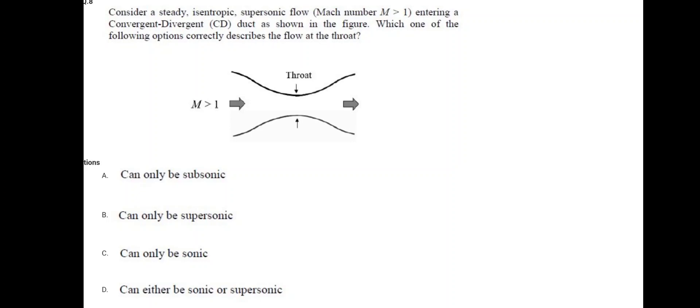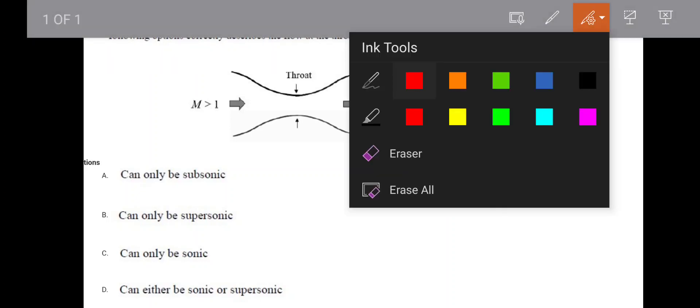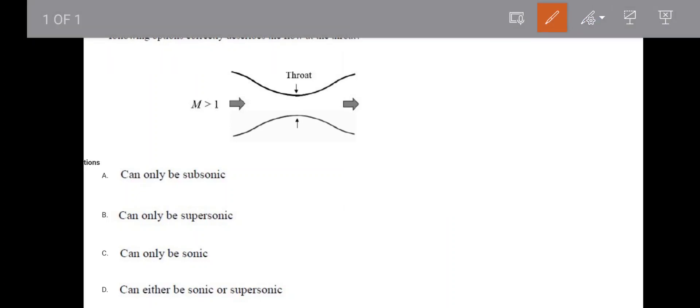If you have this kind of duct which is a convergent duct, and in this if supersonic flow is going, this supersonic flow in convergent duct, what do you think? What happens with the supersonic flow in convergent duct?